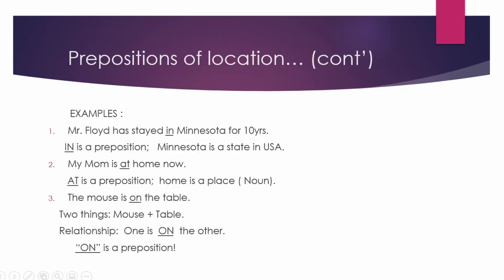Brief examples of preposition of location: One — Mr. Floyd stayed in Minnesota for 10 years; 'in' is the prepositional word and Minnesota is a state. Second example — My mom is at home now; 'at' is the preposition and home is a place, classified as a noun. Third example — The mouse is on the table; mouse and table are two things, and 'on' shows the relationship between them.